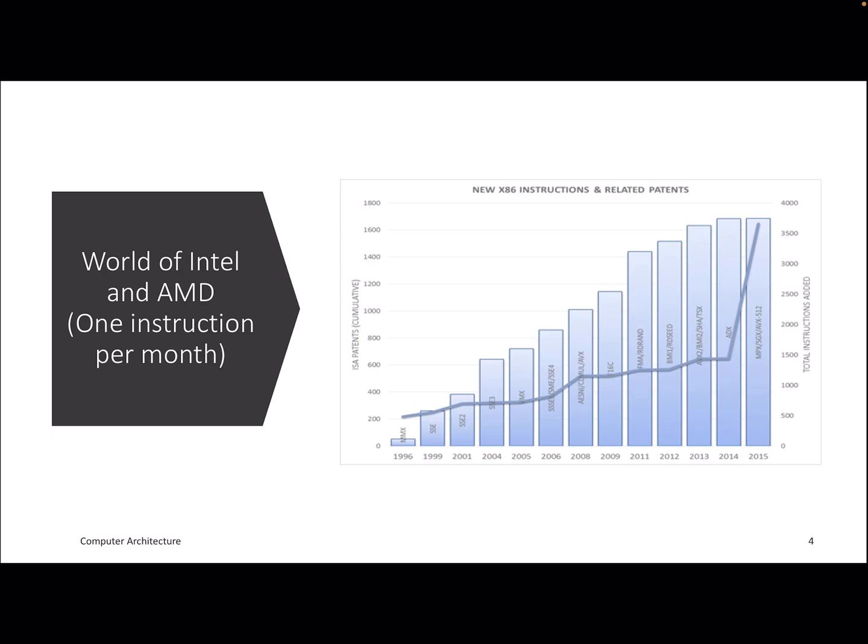We'll just digress a bit. We'll look into the history of x86 processors, the world of Intel and AMD. If you look at this particular chart, it shows the number of instructions that are added from 1996 to 2015. The number is pretty huge, like 3000 plus, there's kind of one instruction per month approximately, and then it may go up and up, who knows?